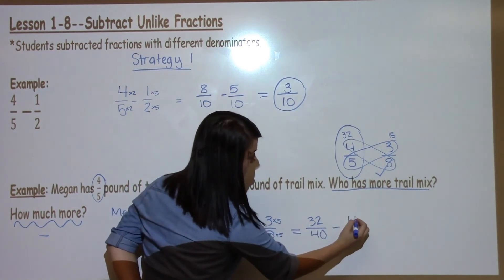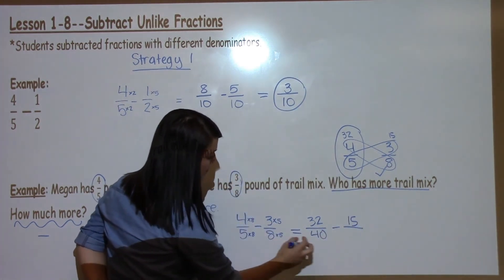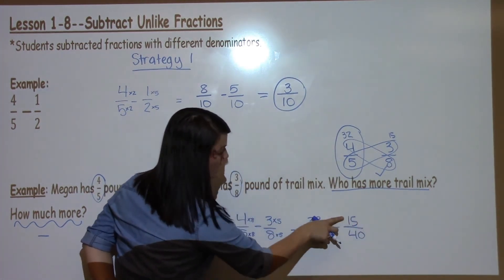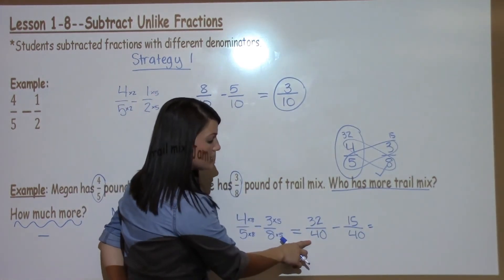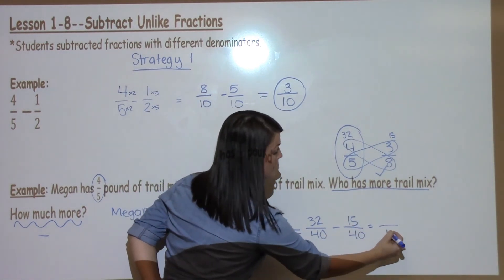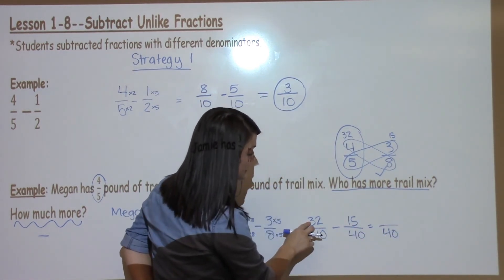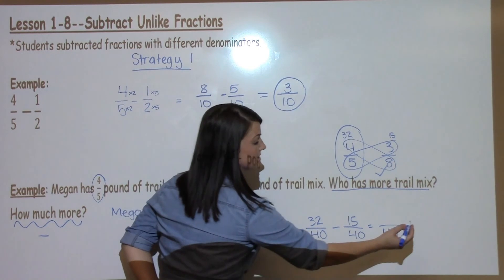3 times 5 is 15, 8 times 5 is 40. 15 fortieths is equivalent to 3 eighths. Now that my denominators are the same they get to stay the same and I just subtract 32 minus 15.